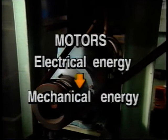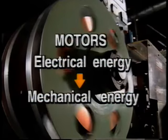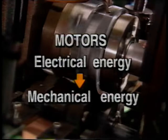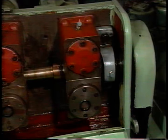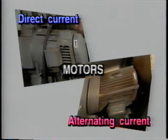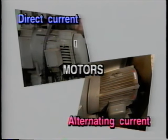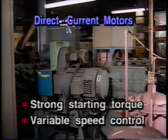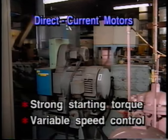The basic function of motors is to convert electrical energy into mechanical energy and supply power to machines. Depending on the type of power source, there are two basic types of motors: direct current and alternating current. They're used for different purposes according to their particular characteristics. Let's take a look at DC motors first.